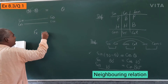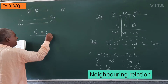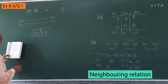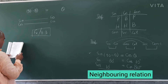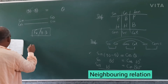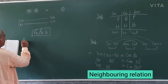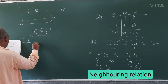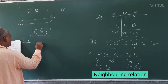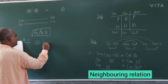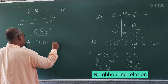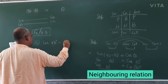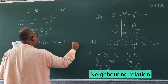Exercise 8.3 — any questions will be easy for you. I will solve Question Number 1. Let's take part three: cos 48° minus sin 42°. Check it — 48 and 42, are they complementary? 48 + 42 = 90. Yes, they are neighboring.